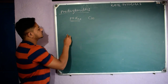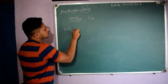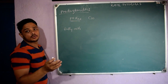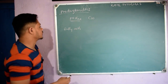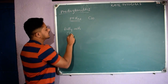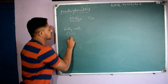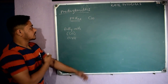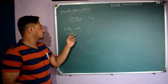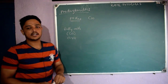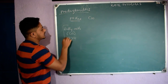Prostaglandins are nothing but fatty acids. We know fatty acids contain 18 carbons and a carboxylic acid group (COOH). However, in prostaglandins we elongate the chain from 18 to 20 carbons. So prostaglandins also contain the COOH group, that is the fatty acid group.